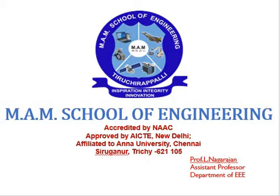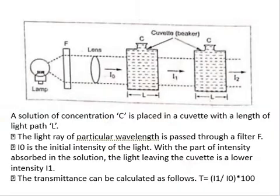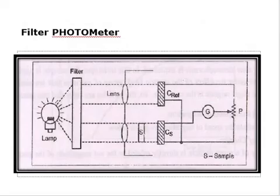In Colorimeter we studied about the single beam, using the single beam of light. Whereas in case of Flame Photometer we are going to study double beam. This is the Flame Photometer and we are going to study using this double beam.